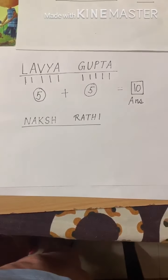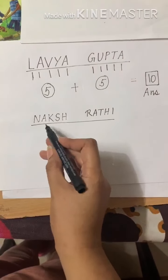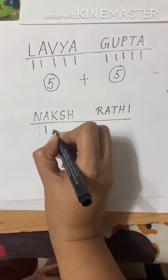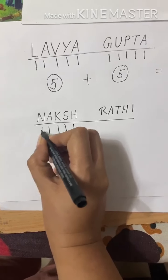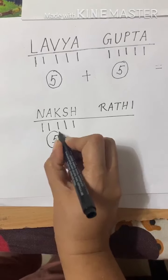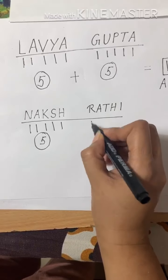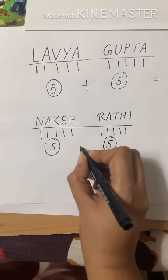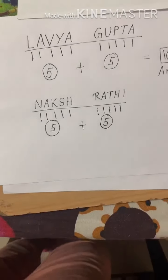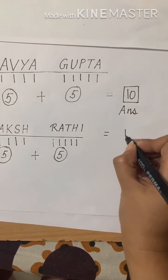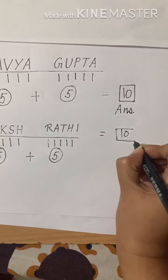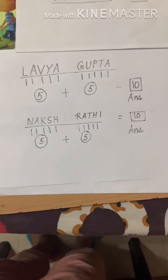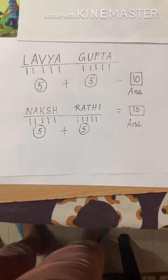Let's take another example — Naqsh Rathi. Let's count the alphabets in Naqsh: 1, 2, 3, 4, and 5. We again have 5. Rathi: 1, 2, 3, 4, 5. We have got 5 again. So 5 and 5 will again be 10. The name number for Naqsh Rathi and Lavyaa Gupta are the same — they are both 10.